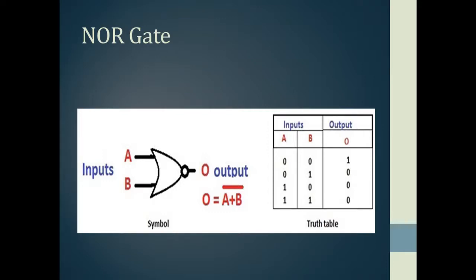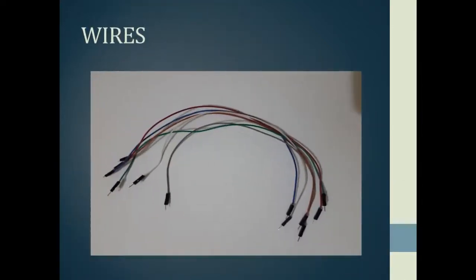By the combination of the OR and NOT gate we will get a NOR gate. You can see the circle sign — the invert or opposite sign — and the Boolean expression O equals A plus B with a bar above it, meaning it is the opposite of the OR gate. The truth table proves it: in the OR gate when both inputs are zero the output was zero, but in the NOR gate when both inputs are zero the output is one. And when any or both inputs are one, the output is zero.